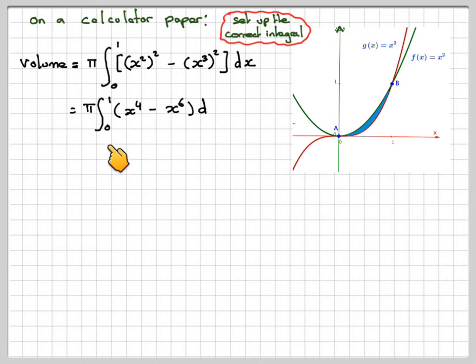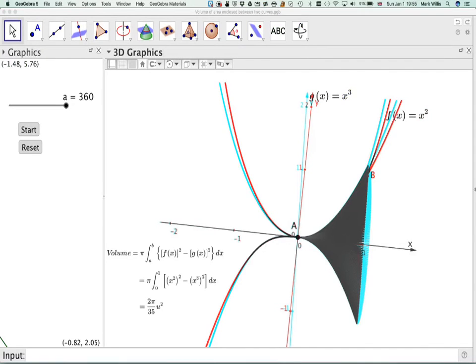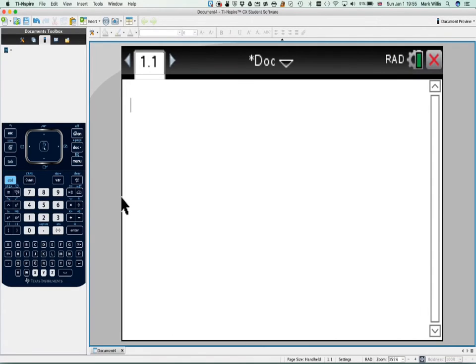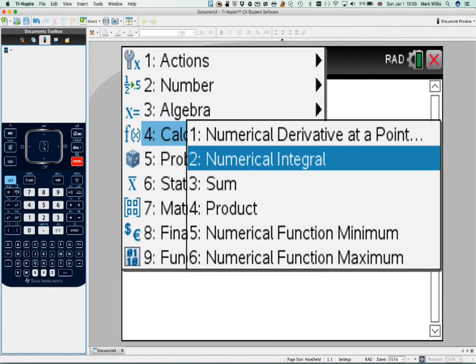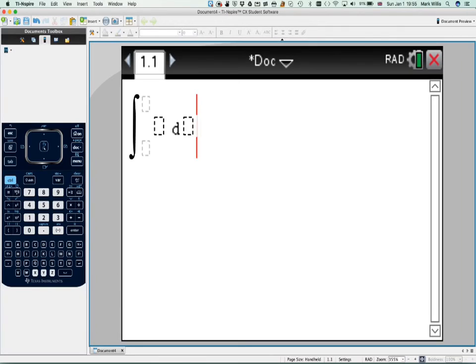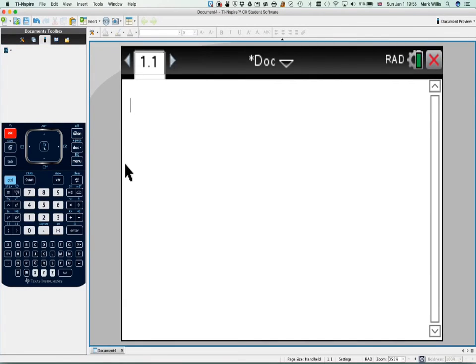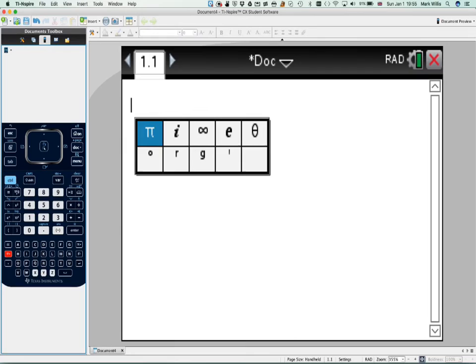Perhaps simplifying the integral. And then this is where we go to our GDC. Going to our GDC and selecting a calculation mode. We need to put in the π first. You can do π. Then menu, calculus, numerical integral.